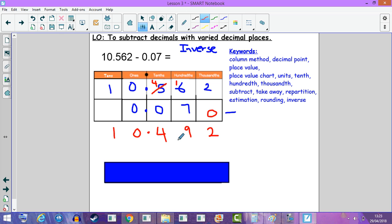So our answer is 10.492. We need to check our answer though. So using the inverse, you could do 10.492 add 0.070, which should give us 10.562. We have 10.562, so that must mean our answer is correct.